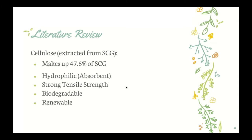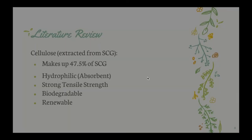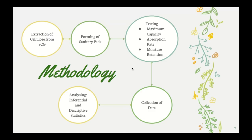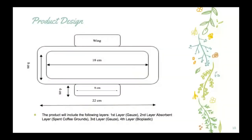Natural fibers are extremely advantageous for this purpose because they're hydrophilic, meaning highly absorbent, have strong tensile strength, are biodegradable and renewable, and are disposable. Cellulose makes up over 47.5 percent of spent coffee grounds, telling us it can be a good base material for the absorbent core. Our method involves: first, extracting cellulose from spent coffee grounds for use in the absorbent core; second, forming the sanitary napkins; and third, testing them against commercial pads through maximum capacity, absorption rate, and moisture retention tests.